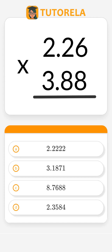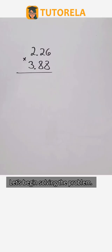What is the length of X if we know that it is part of a right triangle with the other two sides measuring 2.26 and 3.88? Let's begin solving the problem.